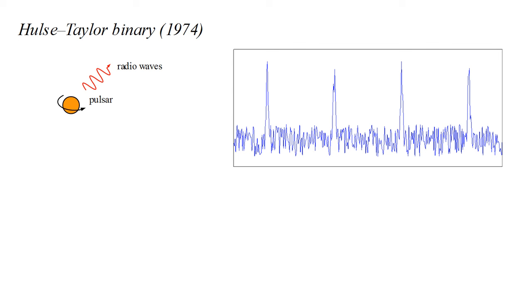The pulses occur, on average, about seventeen times a second. But for a few hours they move slightly closer together, and then for a few hours they move slightly further. Clearly the pulsar is periodically moving toward and away from Earth, indicating that it is orbiting as part of a binary system.